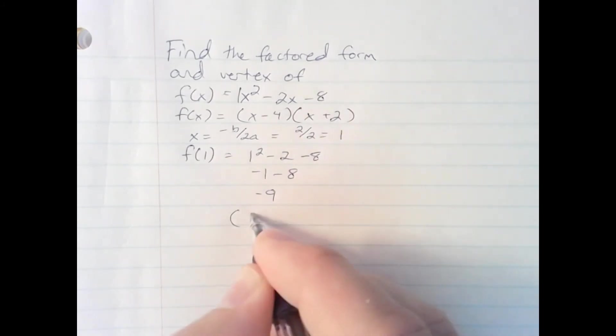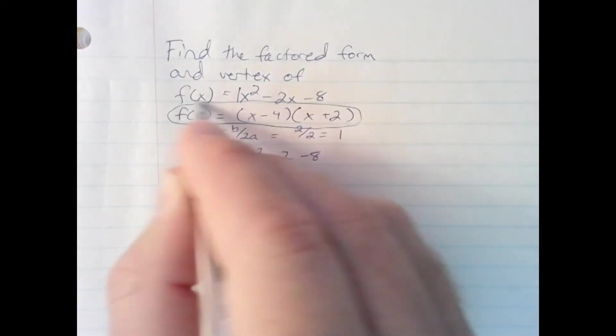So the vertex is 1, negative 9. So there's our factored form and our vertex.